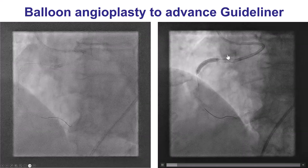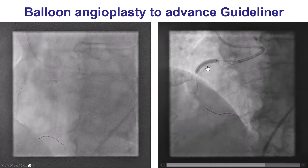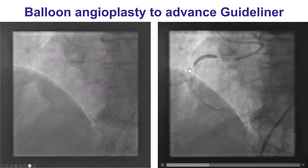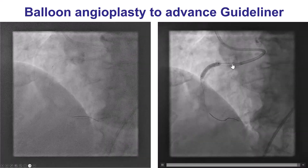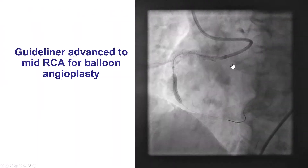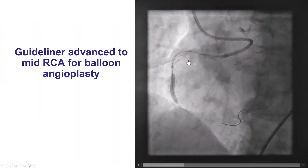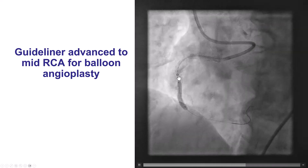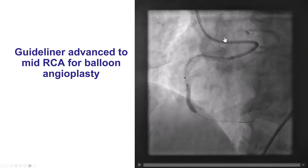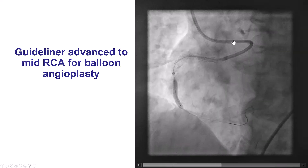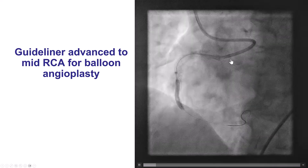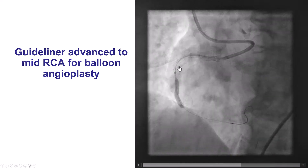The next step was to deliver a guide extension using the inchworming technique. First, the previous stents were post-dilated, and then through the inchworming technique, a guide liner was advanced to the mid-right coronary artery. Now we have the combination of the 3D-RIDE providing strong support, along with the guide extension.